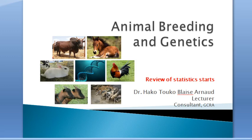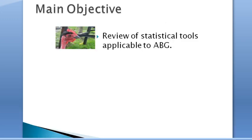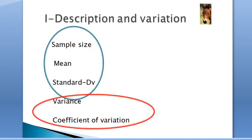Dear students, today we are going to start with our review of statistics as applied to animal breeding and genetics. That's our main objective of the day. We are going to discuss about two categories of parameters of samples or population. We firstly have description parameters and then parameters used to describe the variation. Let's start with the first category.